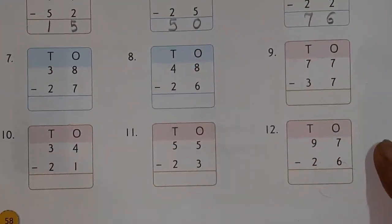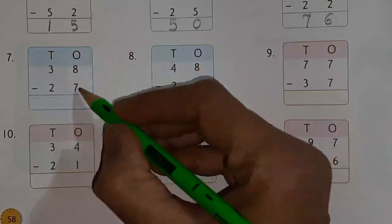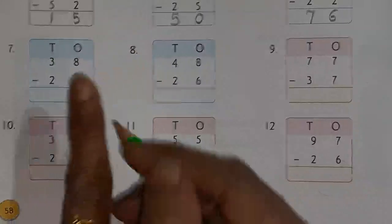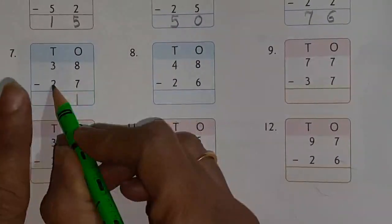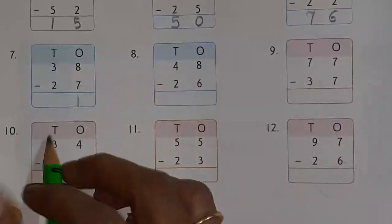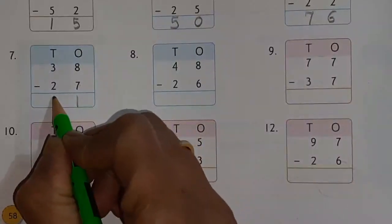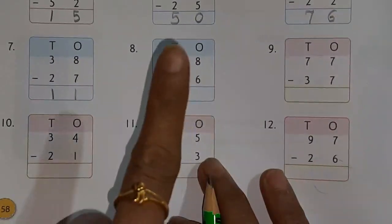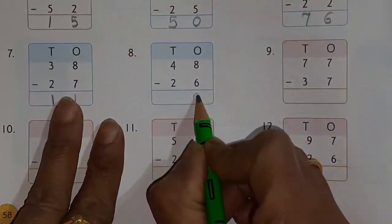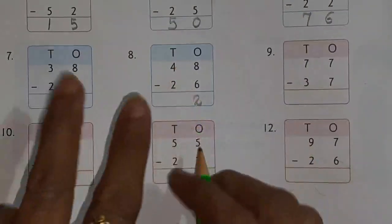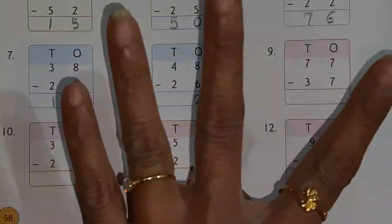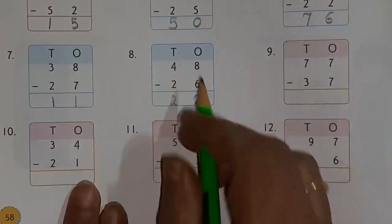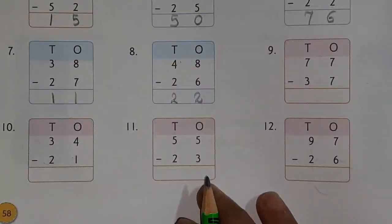Next one: 8 minus 7. After 7 count till 8 — so only 1. Then tens column: after 2 comes 3, so 1. Your answer is 11. Next: after 6 count 7, 8 — 2 fingers, so write 2. Then 4 minus 2 — open 4 fingers, cut 2, answer is 2. Or count after 2 till 4 — 3, 4 — answer is 2.